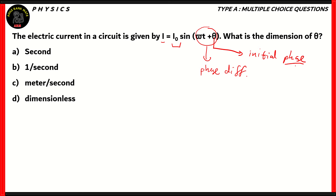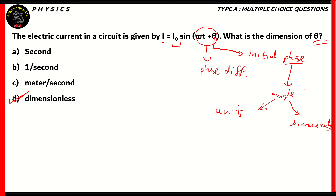So the word phase here basically stands for angle. So theta here is basically an angle. And angles are the only quantities which have a unit, but are dimensionless. So therefore, the dimensions of theta do not exist because theta is a dimensionless quantity. Even though angles are expressed in radians, and solid angles are expressed in steradians, both of these have units, but they are dimensionless quantities. So therefore, option d is the right answer.